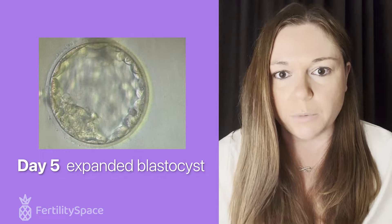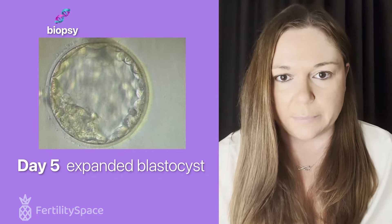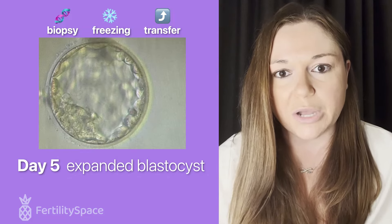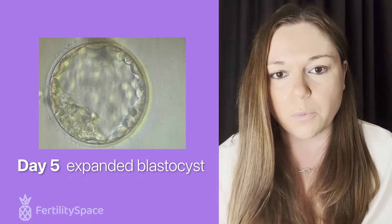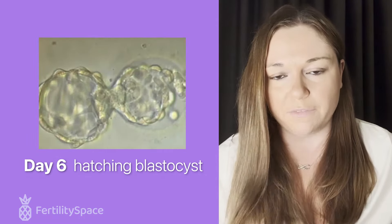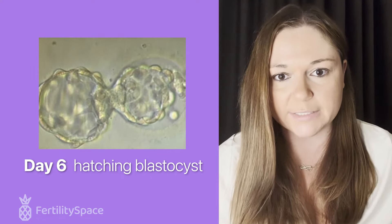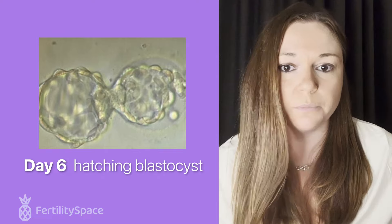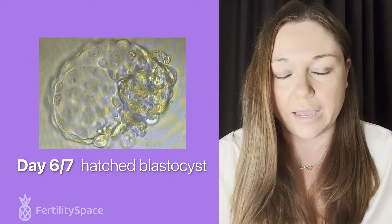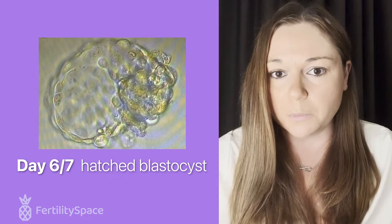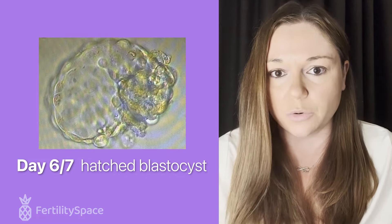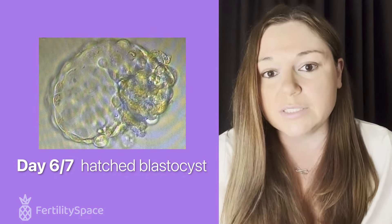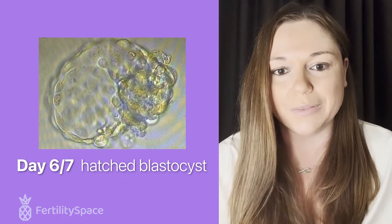The expanded blastocyst stage is where most clinics begin biopsies, freezings, and transfers. From there, the shell becomes so thin that the embryo starts to hatch out of it — becoming a hatching blastocyst — and then it fully hatches out of the shell, called a hatched blastocyst. This is important because embryos need to hatch in order to implant into the uterine lining. If an embryo does not hatch, it won't be able to implant.